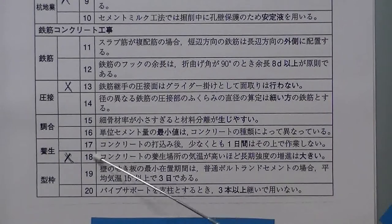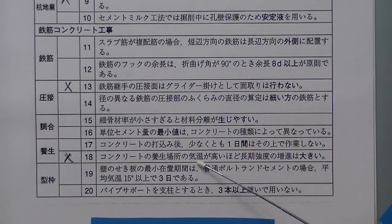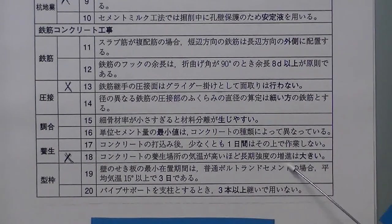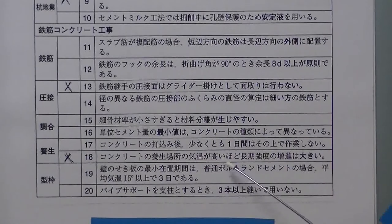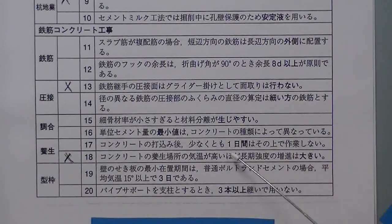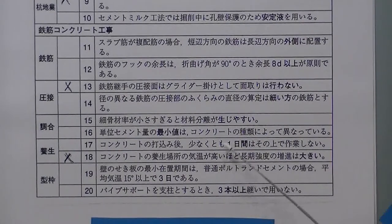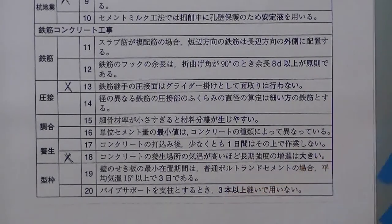コンクリートの養生場所の気温が高いほど長期強度の増進が大きいとありますが、気温が高いと長期強度の増進は大きくならない。低いほど長期強度は大きくなります。気温が高いとすぐ強度が出てしまい、長期強度が小さくなってしまうということです。